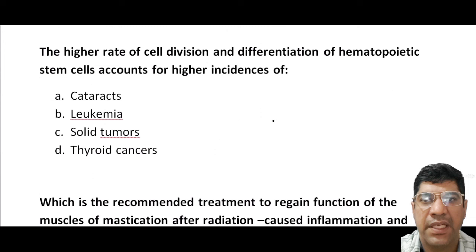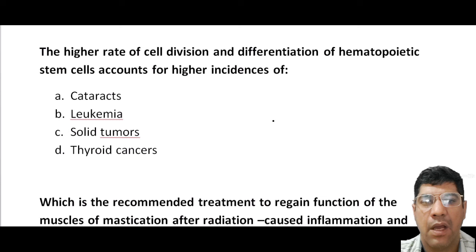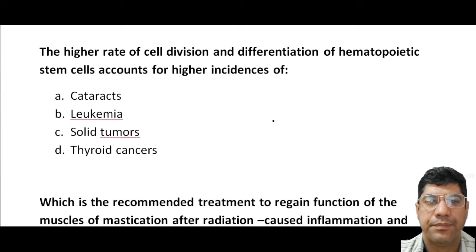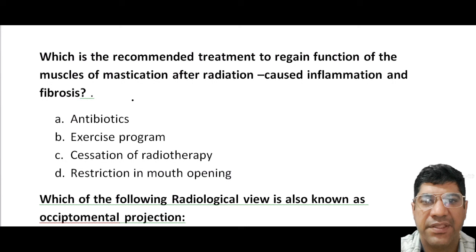The higher rate of cell division and differentiation of hematopoietic stem cells accounts for the higher incidence of leukemia. Leukemia is a type of cancer that affects the blood and bone marrow, involving uncontrolled production of white blood cells in early stages of development. These cells divide rapidly and abnormally, leading to a higher incidence of leukemia.